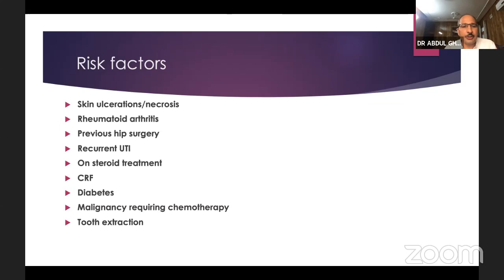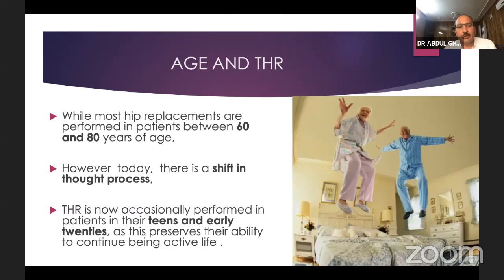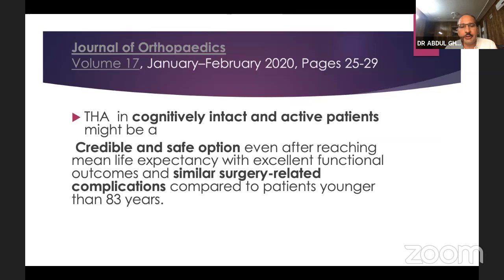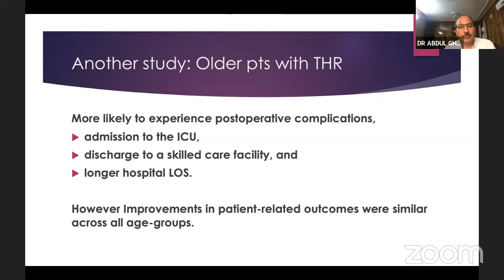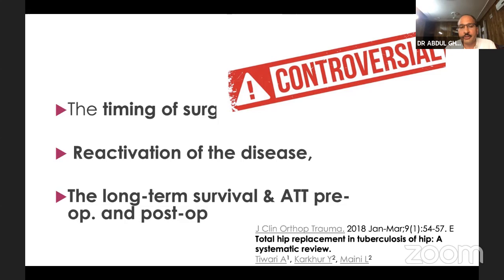Relative contraindications also include renal dysfunction especially with metal-on-metal implants, and implant allergy. Risk factors for complications include skin ulceration or necrosis, rheumatoid arthritis, previous hip surgery, UTI, steroid treatment, CRF, diabetes, malignancy requiring chemotherapy, and recent tooth extraction. Regarding age, the ideal range was formerly considered 60-80 years, but there is now a shift toward extremes — teens and early 20s can undergo THR with genuine indications, and there is no upper chronological age limit beyond which THR cannot be offered.